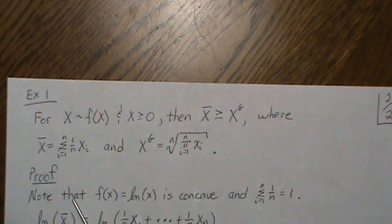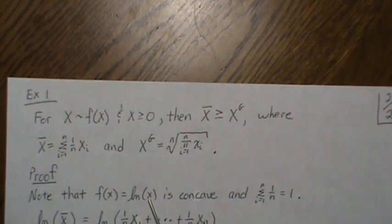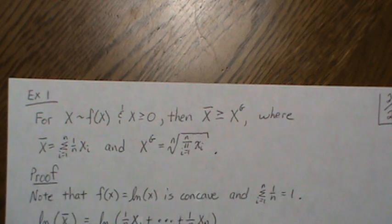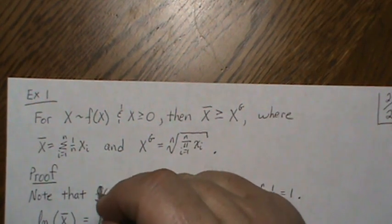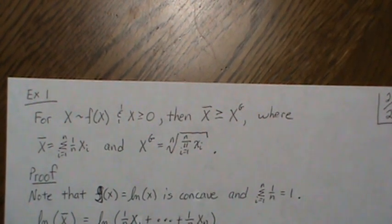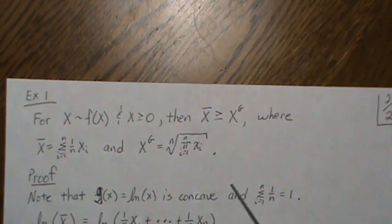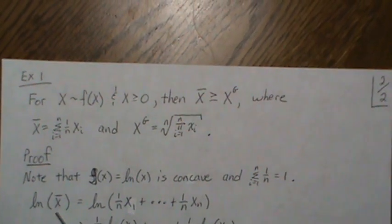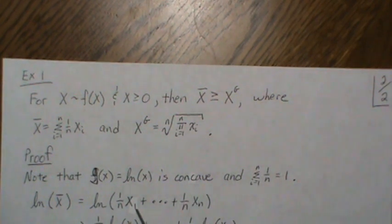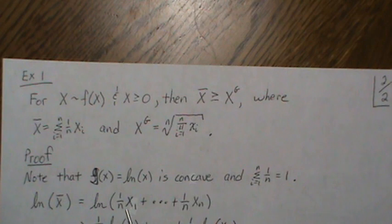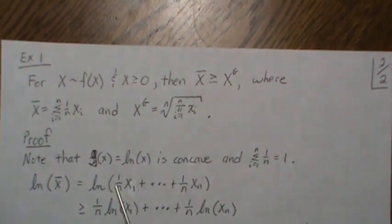Before we start, note that G(x) = log(x) is concave, and that summing 1/n from 1 to n equals 1 — those are the key facts. Now look at log of x̄, where x̄ is the arithmetic mean written with coefficient 1/n in front of each x_i. Since log is concave and the coefficients sum to 1, we can apply Jensen's inequality, giving log(x̄) ≥ (1/n) * sum of log(x_i).